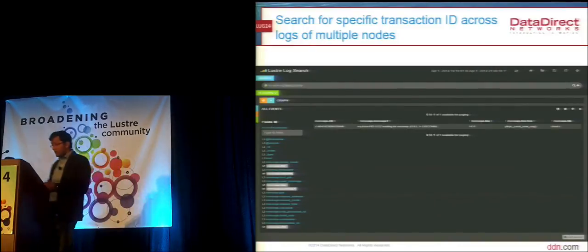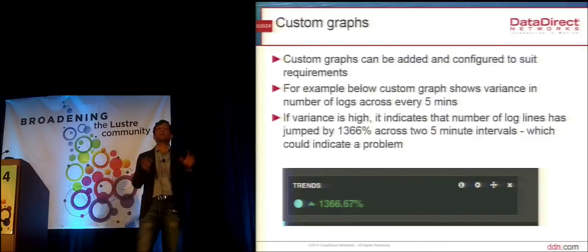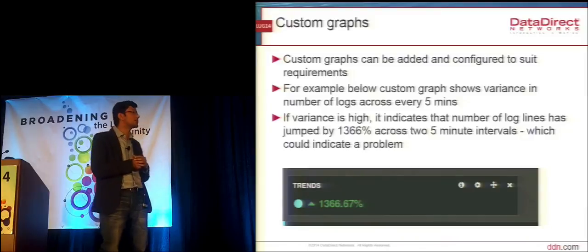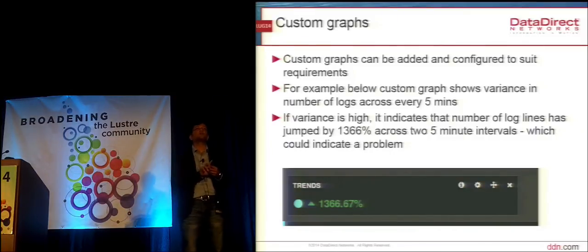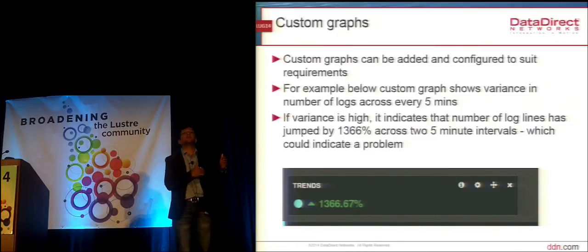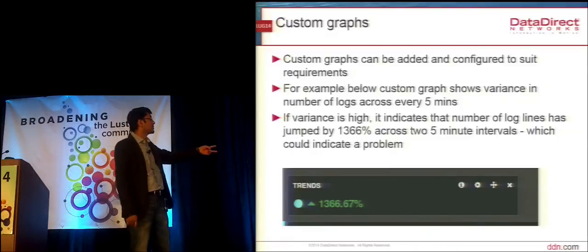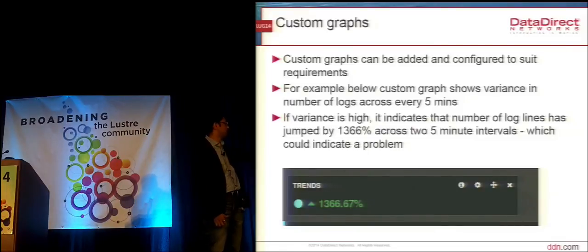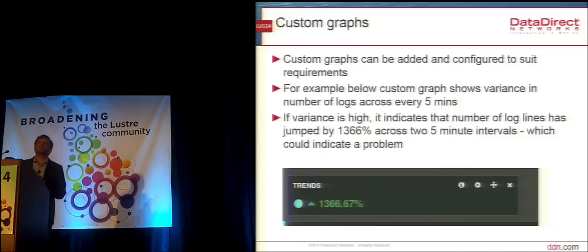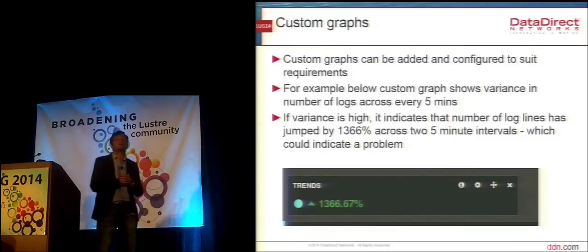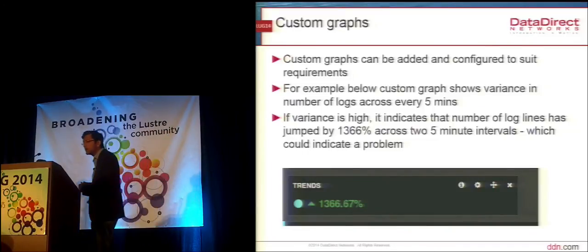You can create any sort of custom graphs and build a monitoring dashboard, especially for administrators. The simple custom graph I created here shows the number of log lines created every five minutes and the variance — if in the first five minutes there are a thousand log lines and the next five minutes there are twenty thousand, something may have gone wrong. Here I just restarted a machine, which led to a recovery and many more log lines than you'd see during normal Lustre filesystem operation. You can create bar graphs, pie charts, trending graphs, or even maps.